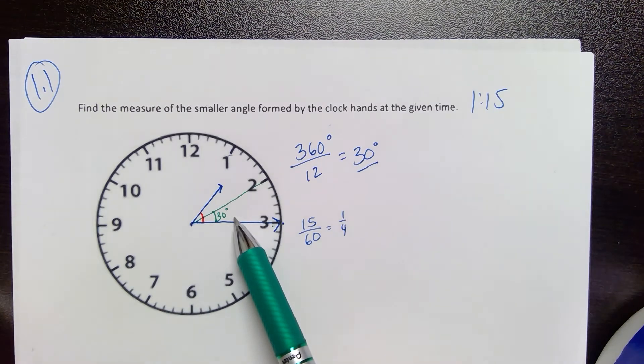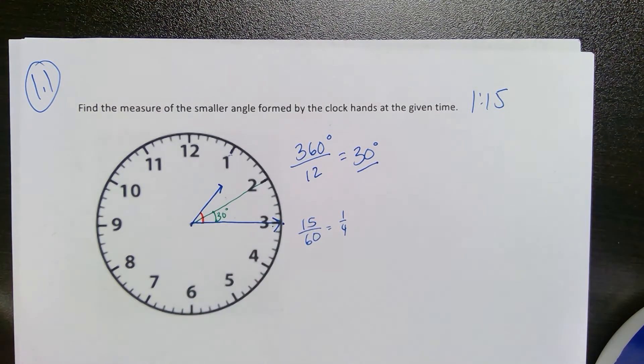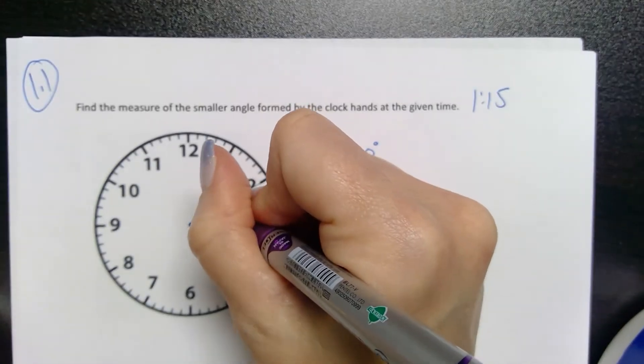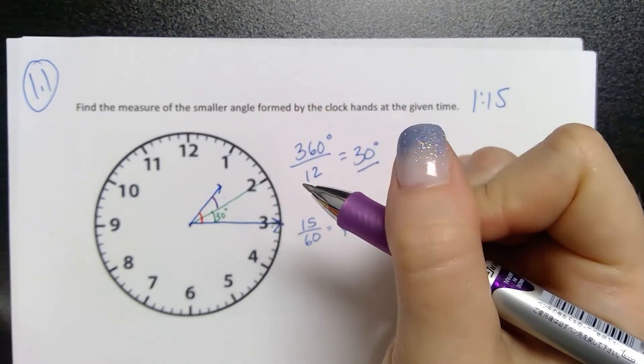So that's 30 degrees right there. And then this piece of an angle between 1 and 2 is going to be less than 30 degrees.